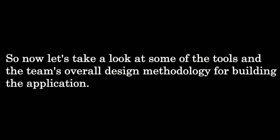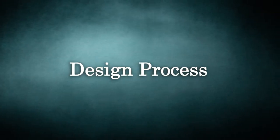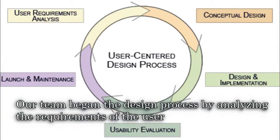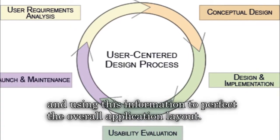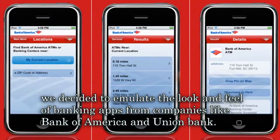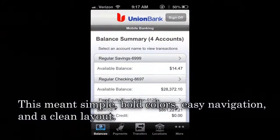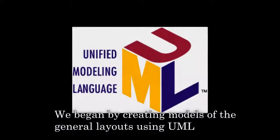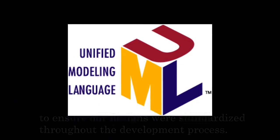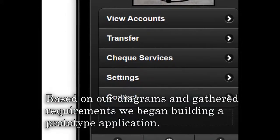Let's take a look at some of the tools and the team's overall design methodology in building the application. Our team began the design process by analyzing the requirements of the user and using this information to perfect the overall application layout. We then created some tests to gather opinions and preferences from our stakeholders. Based on our research, we decided to emulate the look and feel of banking apps from companies like Bank of America and Union Bank — simple, bold colors, easy navigation, and a clean layout. We began by creating models of the general layouts using UML to ensure our designs were standardized throughout the development process. Based on our diagrams and gathered requirements, we began building a prototype application.